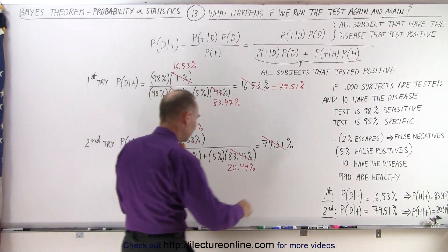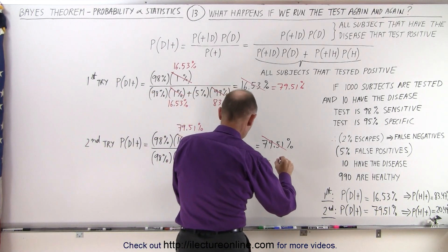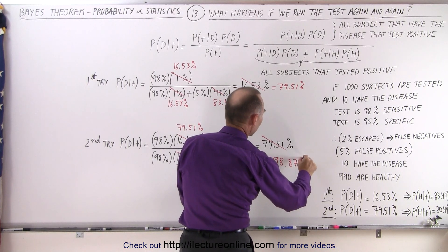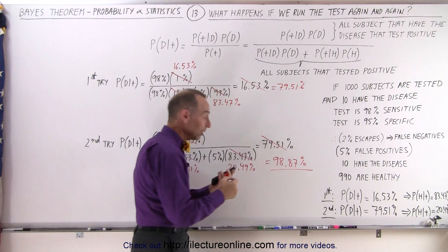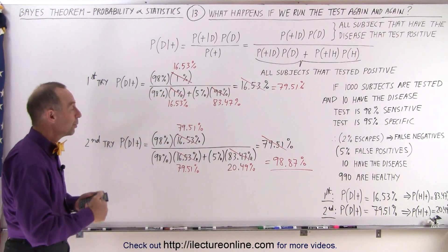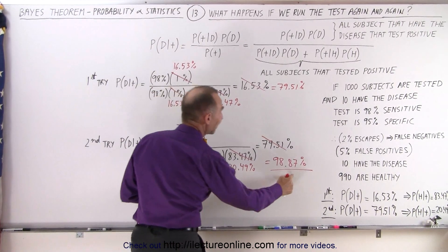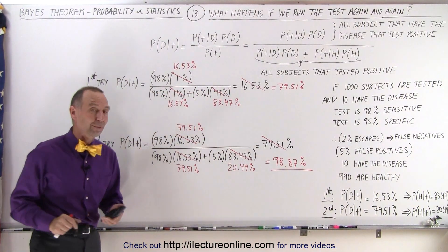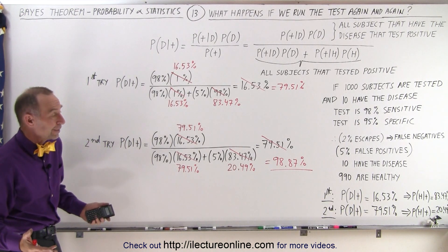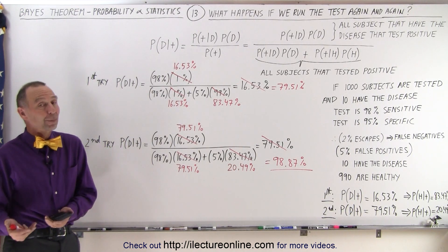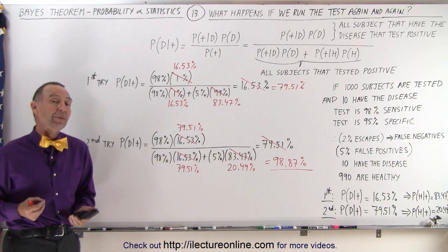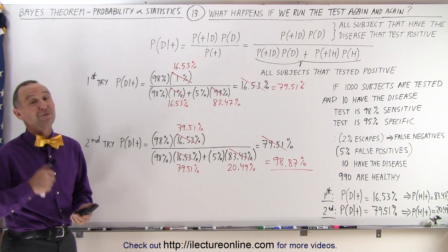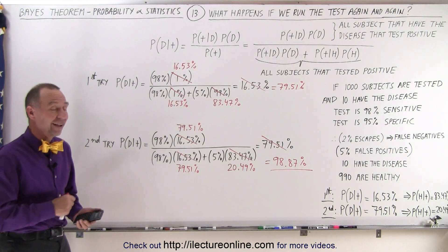Now we are at 98.87%. So now we have a pretty good number. Having run the test a third time, we now have a 98.87% probability that if you test positive a third time, you do have the condition you're looking for. Is that satisfactory? Well, 98.87 is pretty good, but that still leaves more than 1% probability that you don't have the condition. And perhaps you may want to test a fourth time. But that's how that works.